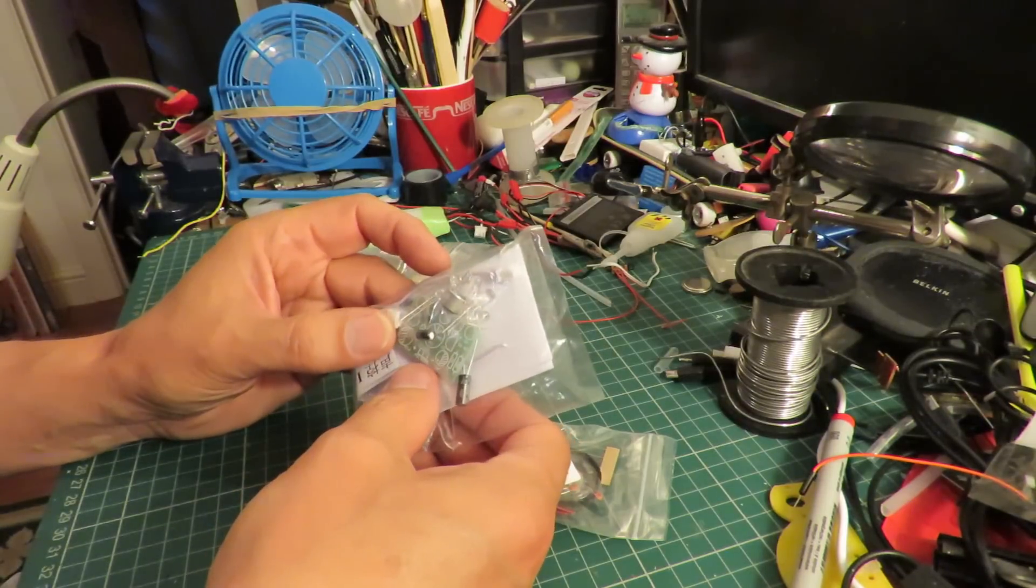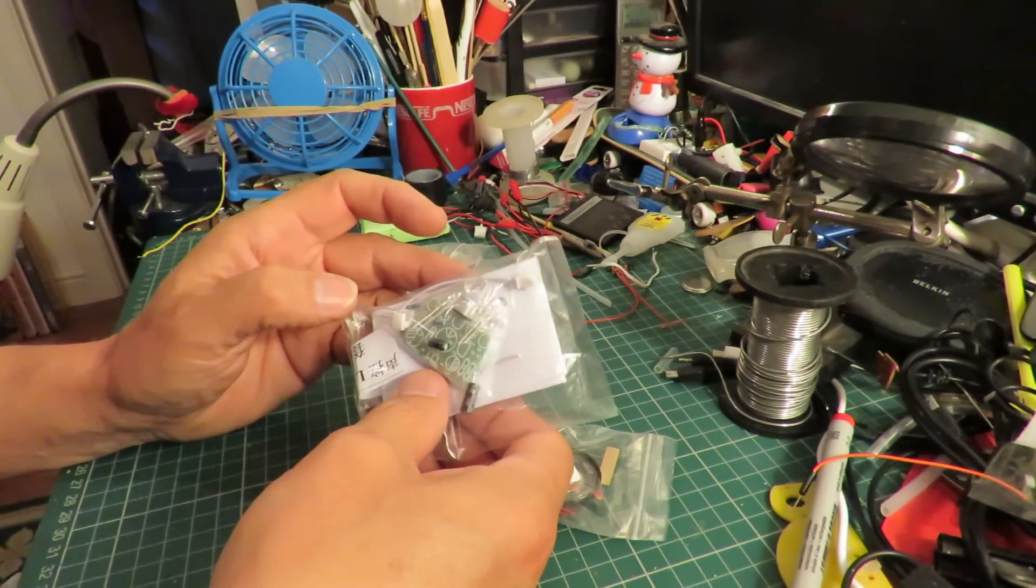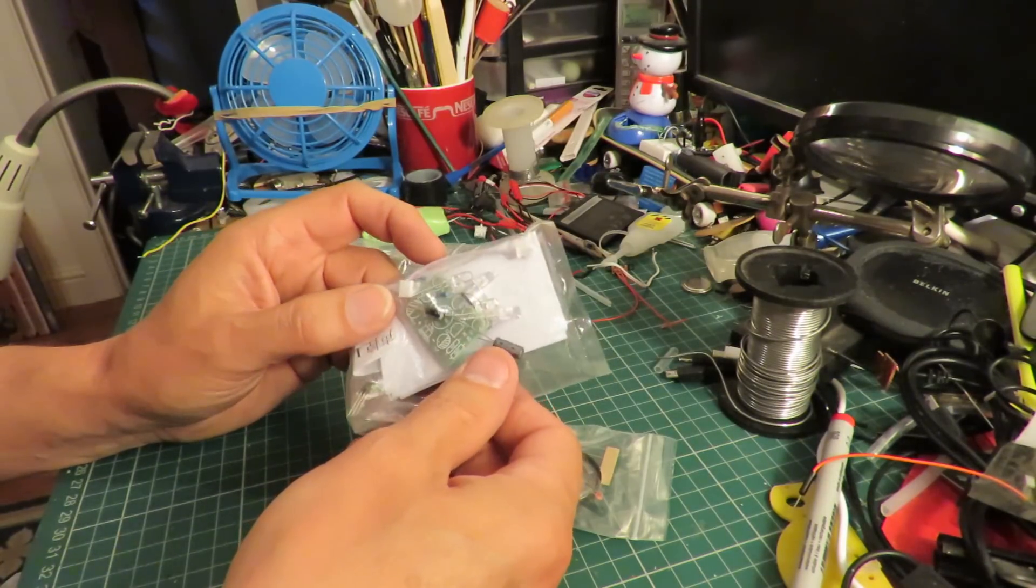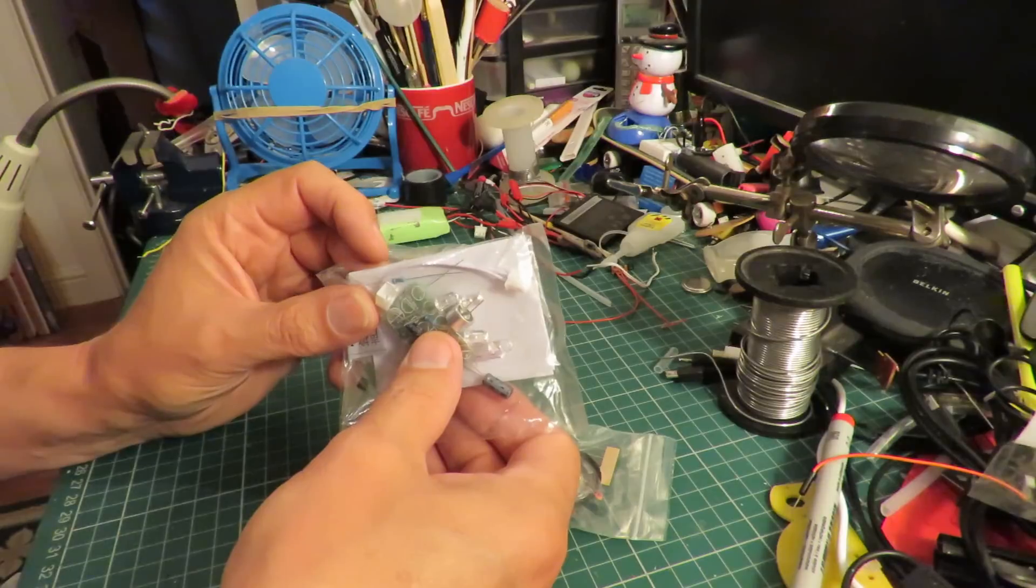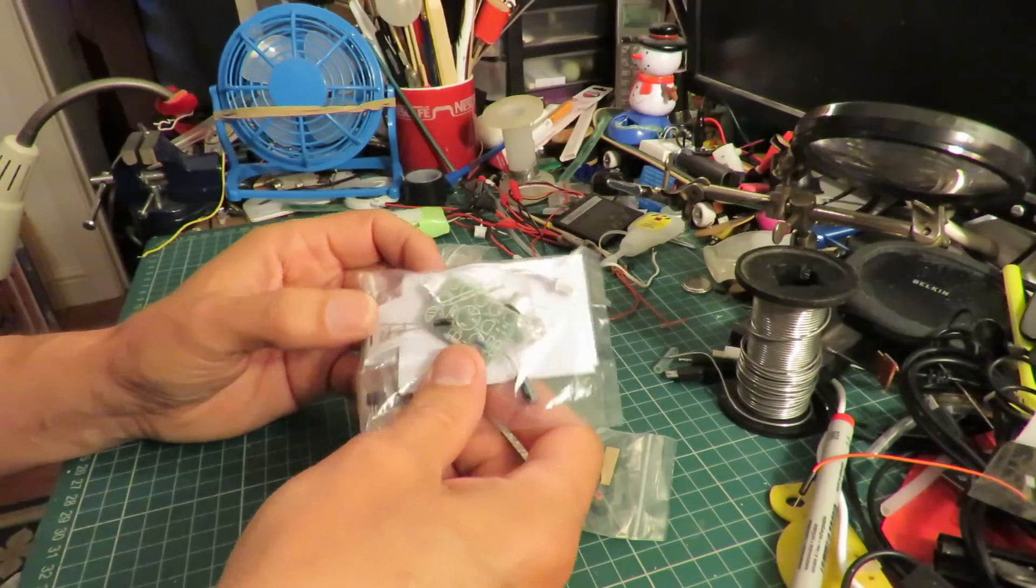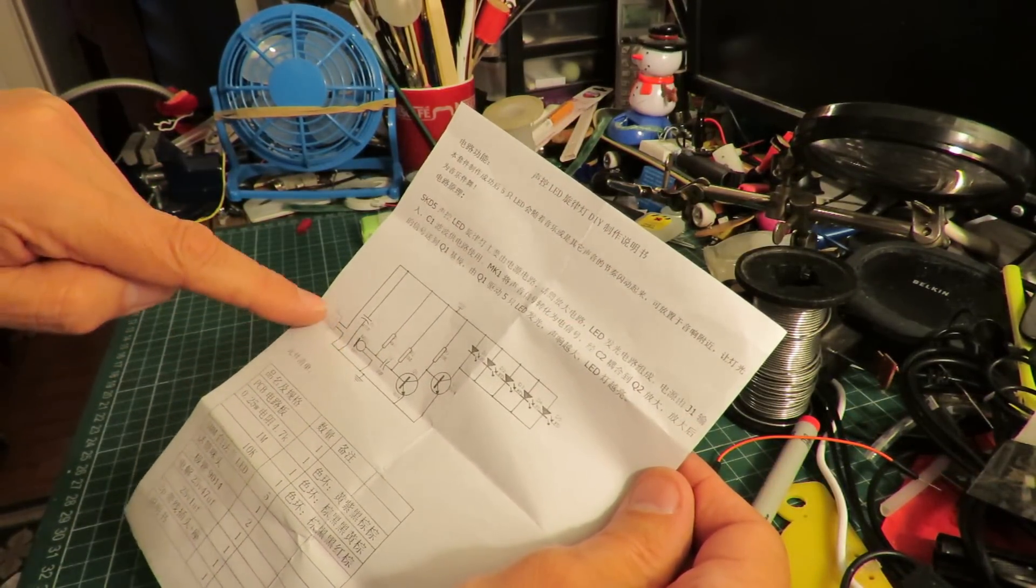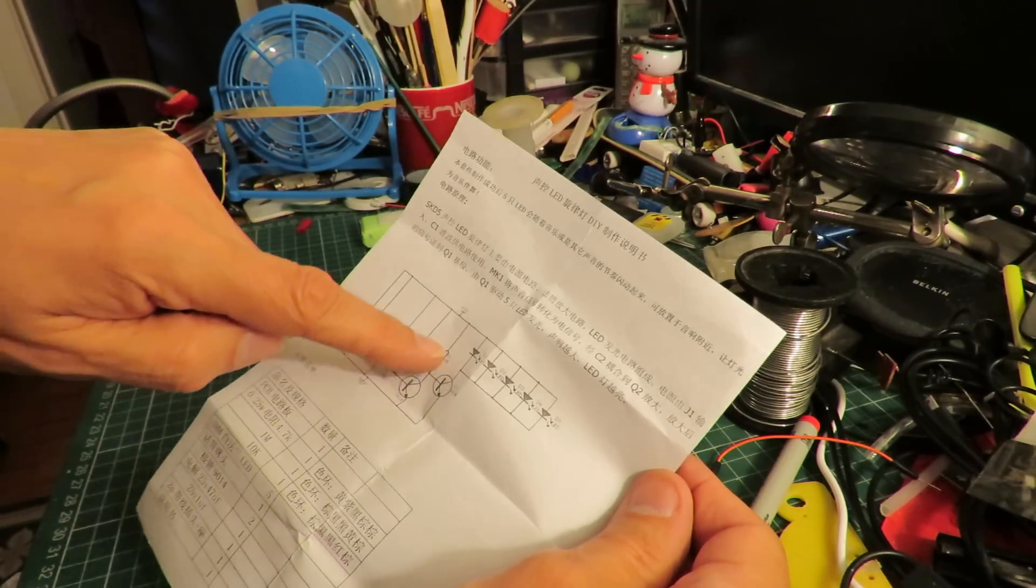Got a microphone and it's got five LEDs, two electrolytic capacitors, one, two, three resistors and a transistor. As far as I can see got a microphone there, battery there, a couple of capacitors, resistors.